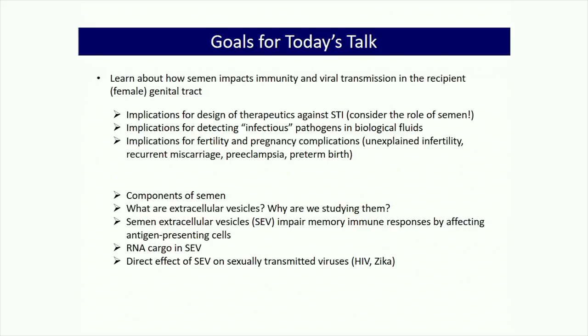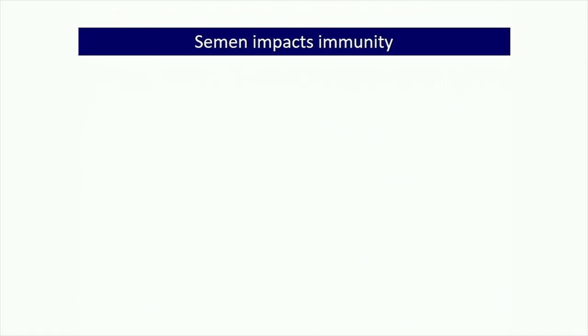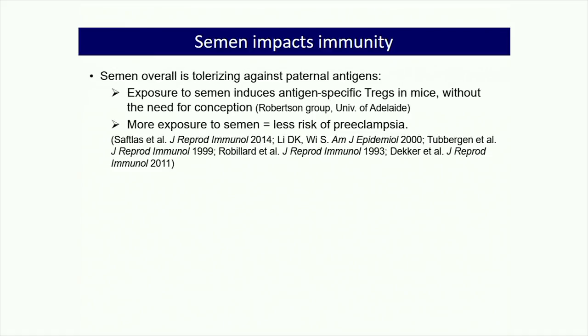I'll present data showing that semen extracellular vesicles, which I call SEV, impair memory immune responses by affecting antigen-presenting cell function, go over the RNA cargo carried by SEV, and show data about direct effects of SEV on sexually transmitted viruses including HIV and Zika. It's been recognized for a long time that semen impacts immunity, which makes sense given evolutionary pressure to support conception and decrease immune responses against semen or fetal antigens. Semen is overall tolerizing against co-delivered antigens like paternal antigens.